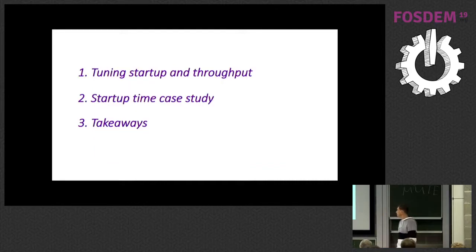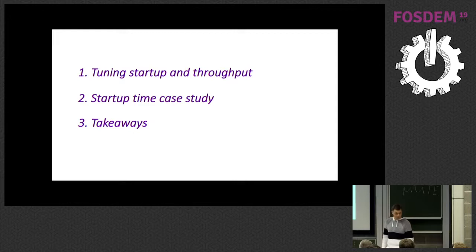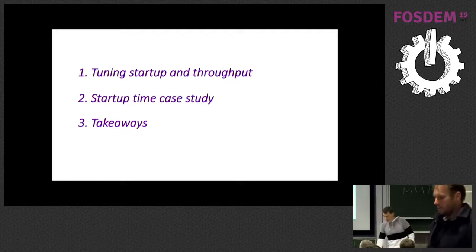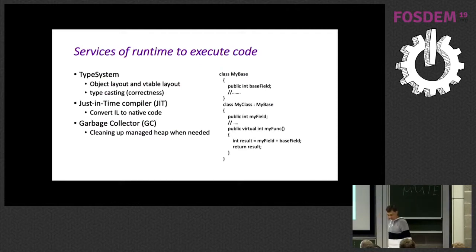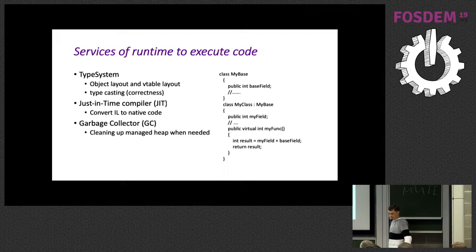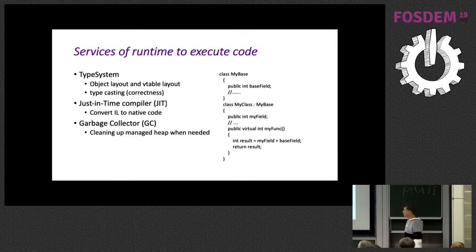This talk is going to be three parts. First, we want to talk about how we tune the runtime for startup and throughput, so that the out-of-box installation on .NET Core or desktop is actually performing. Second, Sergei will walk us through a startup time case study. And third, we will have some takeaways. I want to call out three different runtime services relevant to today's talk: JIT, GC, and type system.